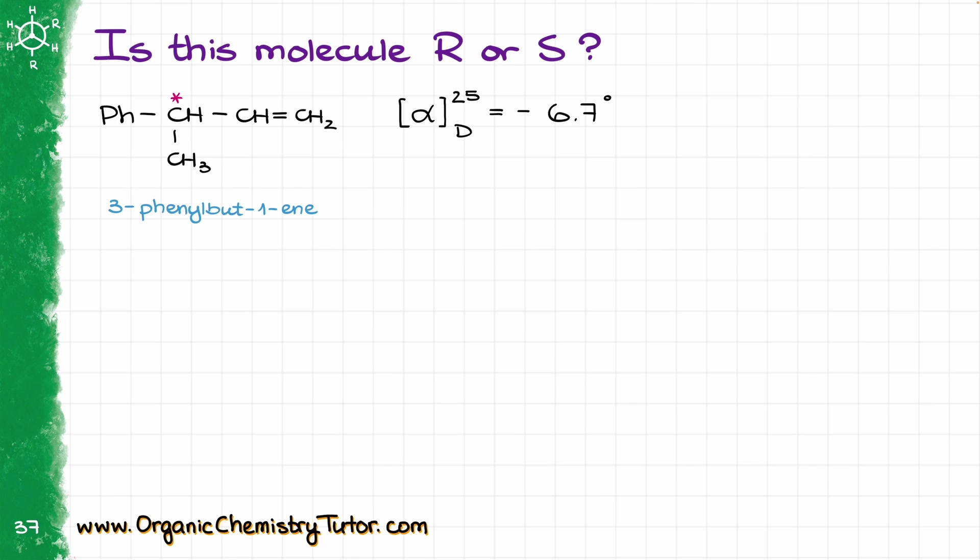you have decided to measure the optical activity of your compound. And you have found that your compound is not only enantiomerically pure, but it also gives you an optical rotation of negative 6.7 degrees. So the question is, is your molecule R or is your molecule S, or in other words, what is the stereodescriptor that we have here?